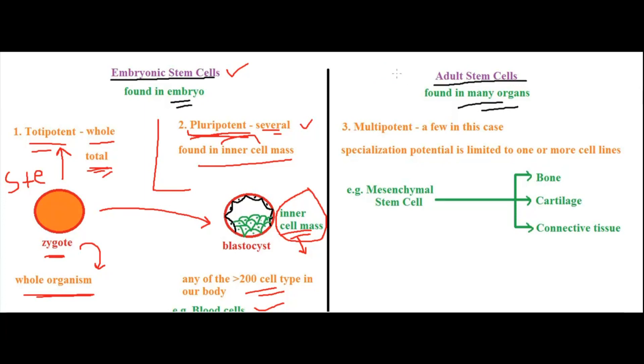Now, adult stem cells are found in many organs. That means they are already kind of specified to become something. They are specialized to become one or more specific cell lines. If present in a particular organ, they will form cells of that particular organ only.